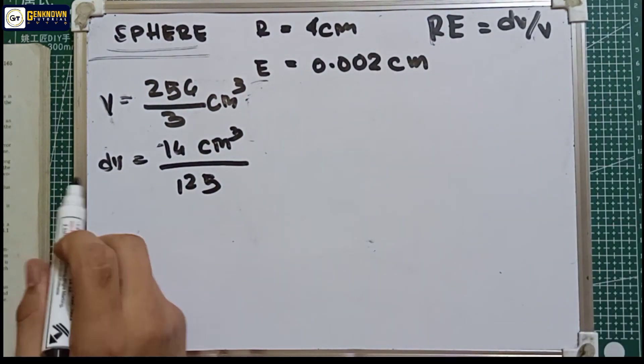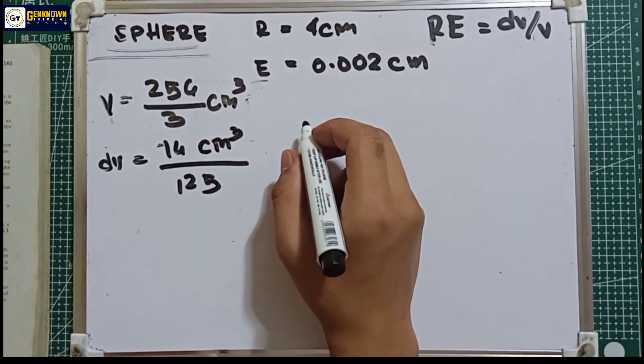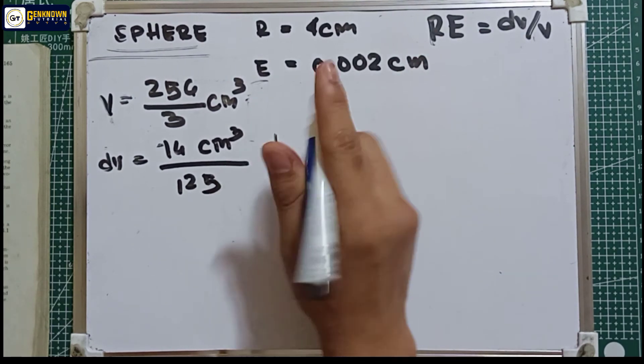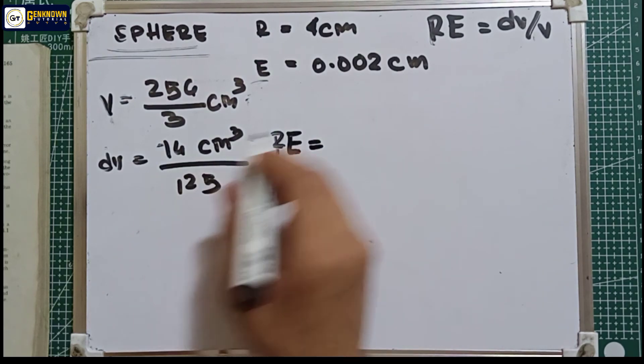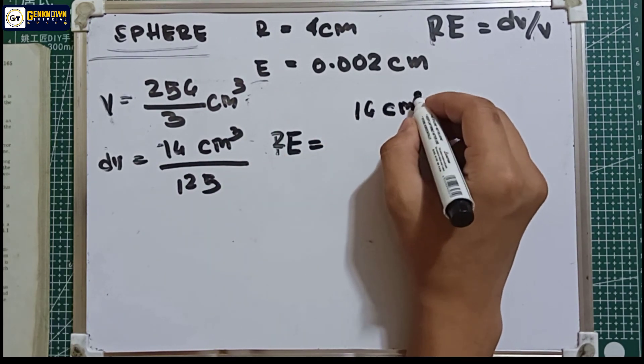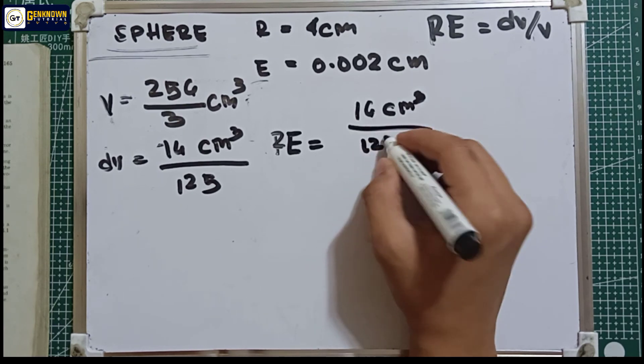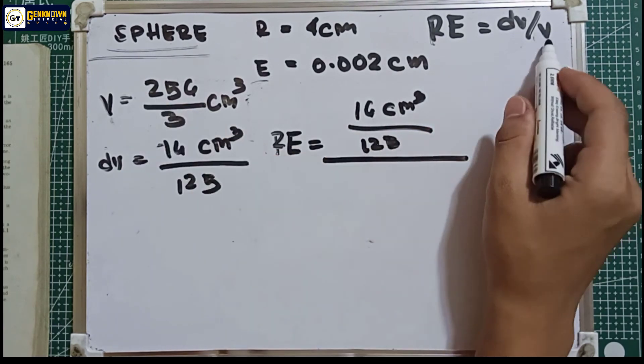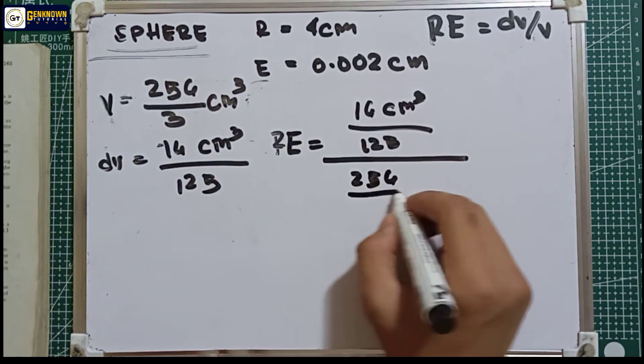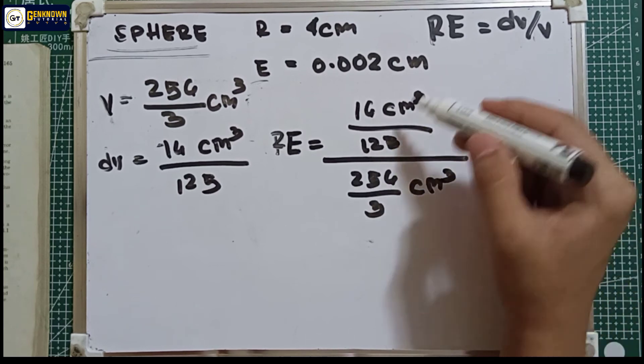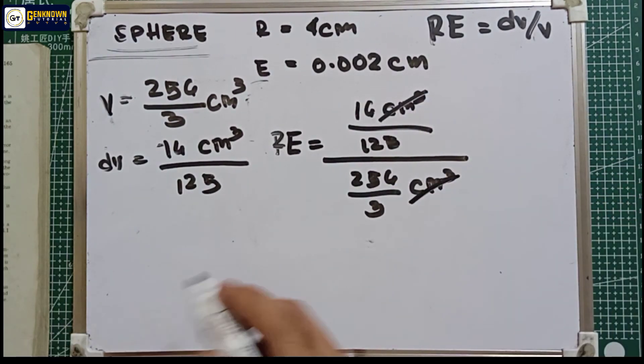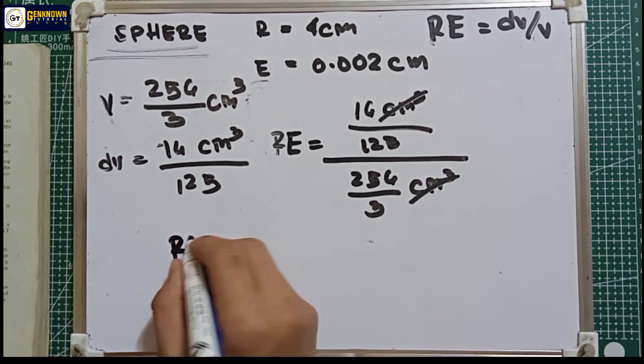Since we have values for v and dv, we can now solve for the value of the relative error. So relative error is equal to dv (16π/125 cm³) over v (256/3 cm³). Simplifying this division, the relative error is equal to 3/2000 or 0.0015. This is the relative error for our number 13.